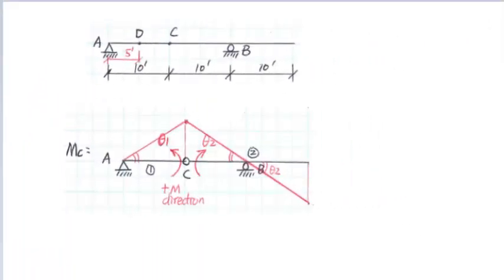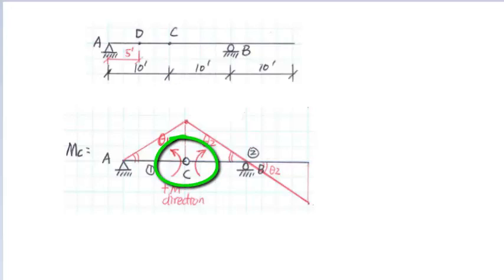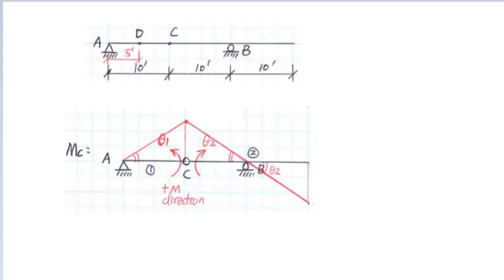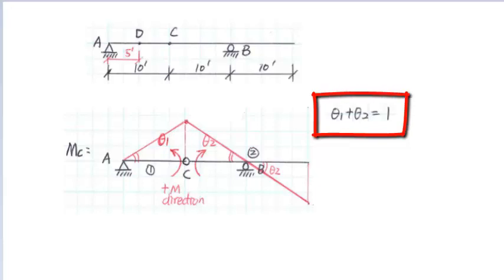First, we will draw the influence line of the moment at point C. In order to obtain the influence line of MC, we need to remove the moment resistance at point C. By removing the moment resistance at point C, the continuous beam AB changes to two separate segments AC and CB, connected by a hinge at C. Let AC and CB rotate in the positive direction of the moment. The rotation angle of segment AC is θ1 and the rotation angle of segment CB is θ2. The sum of θ1 and θ2 equals 1.